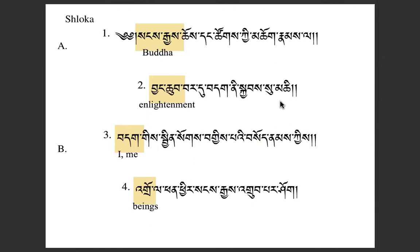Jung-chub is the word highlighted at the beginning, meaning enlightenment. Jung means purified and chub means perfected. The concept of enlightenment is very similar to the concept of a Buddha — Buddha means something like cleansed or woken up, and here we have purified and perfected. So really parallel.